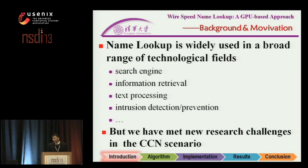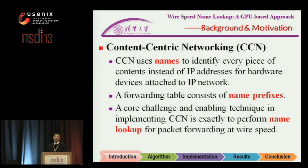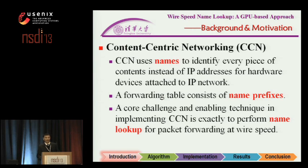Name lookup is a well-established topic, widely used in search engines, databases, and network security. However, we have met some new research challenges. We apply it into the CCN scenario. CCN means content-centric networking. It is proposed as a clean-slate future internet architecture. One of its key features is to use names to identify each piece of data rather than use IP addresses to locate end host devices. CCN routers forward packets by looking up names against a forwarding table.